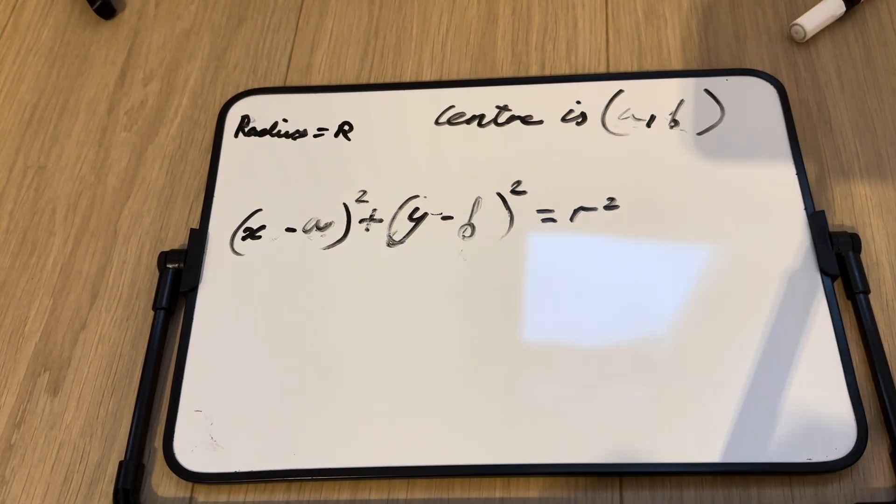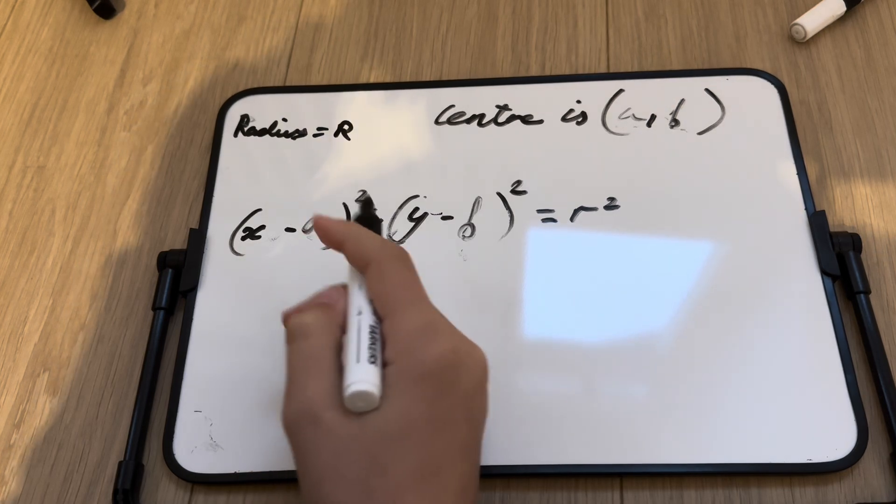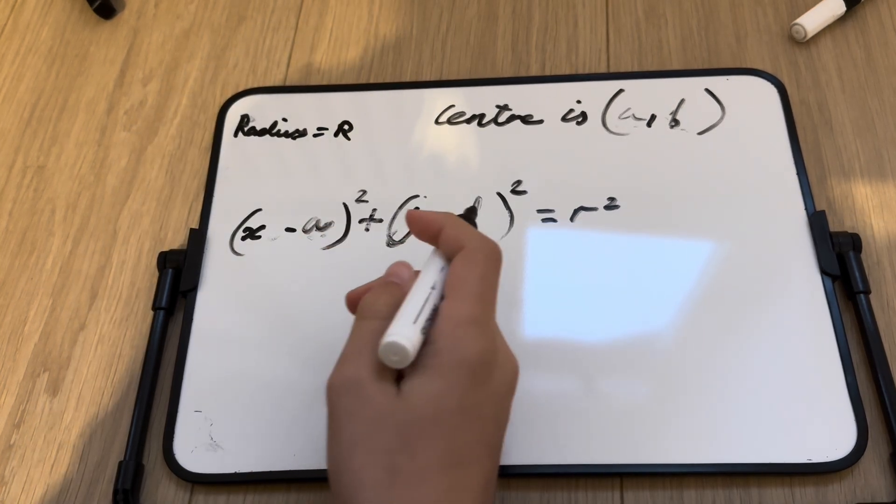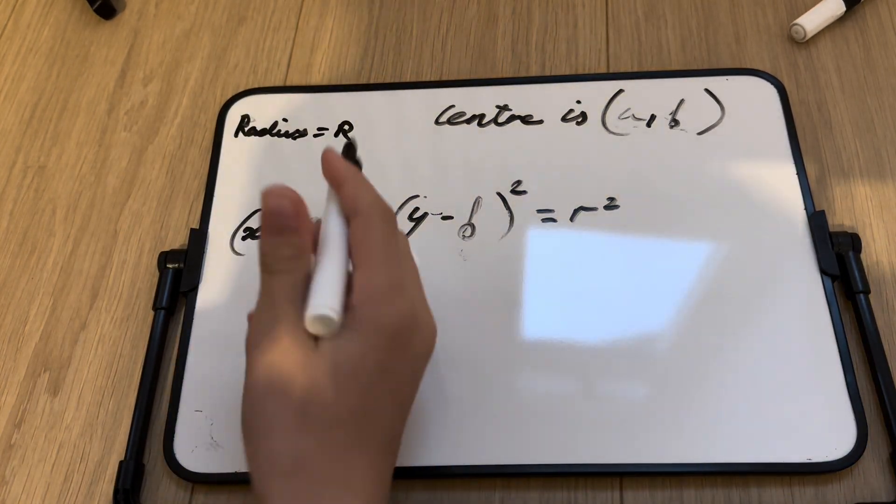Okay, so the equation of a circle is x subtract a squared plus y subtract b squared is equal to r squared, assuming that the radius is r and the center is a comma b.